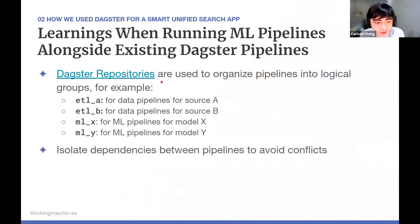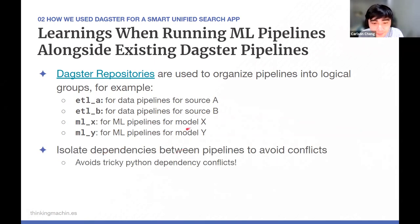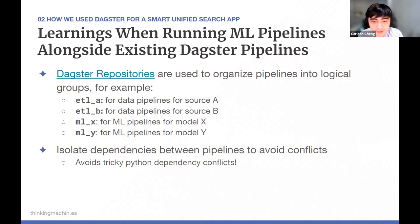We use Dagster's repositories feature to isolate individual groups, which also helps isolate dependencies for each pipeline to avoid conflicts. For example, if model X requires a specific version of PyTorch or scikit-learn, we can ensure that version doesn't conflict with model Y's version of those libraries.